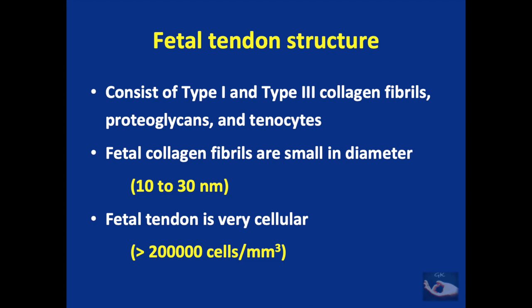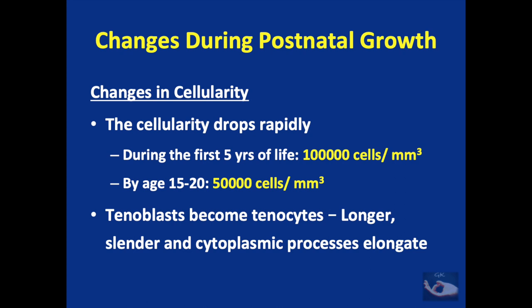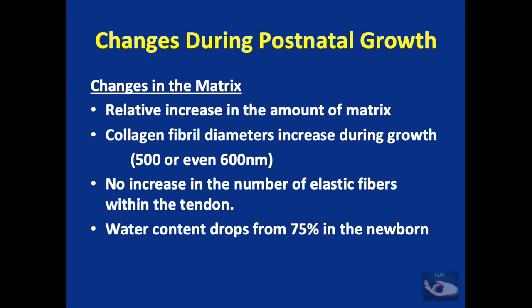The fetal tendon consists of type 1 and type 3 collagen fibrils, proteoglycans, and tenocytes. Fetal collagen fibrils are very small, only about 10 to 30 nanometers in diameter, and the fetal tendon is very cellular, with more than 200,000 cells per cubic millimeter. In postnatal growth, cellularity drops rapidly — to about 100,000 cells per cubic millimeter in the first 5 years of life, and only about 50,000 cells per cubic millimeter by age 15 to 20 years. Tenoblasts become tenocytes, which are longer and more slender with elongated cytoplasmic processes. The matrix also changes: collagen fibril diameters increase up to 500–600 nanometers, and water content drops from 75% in the newborn.